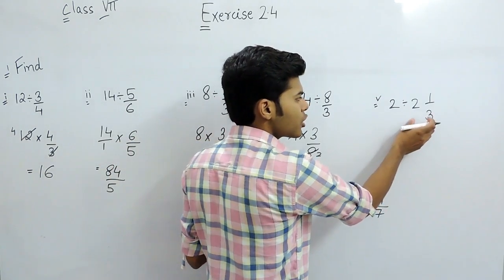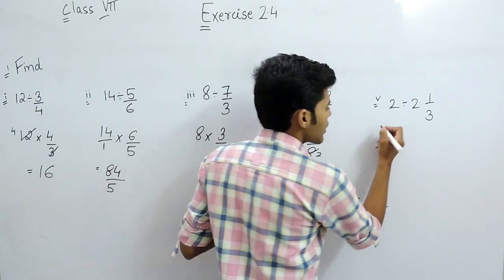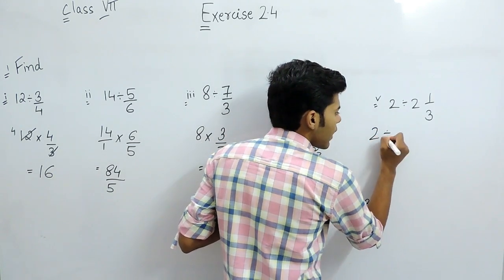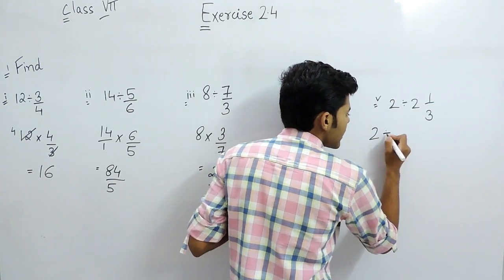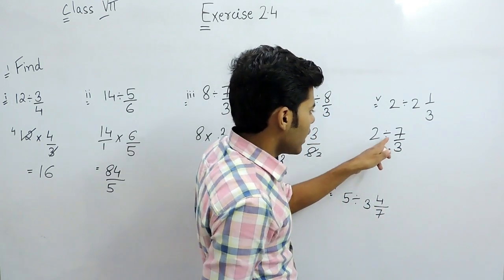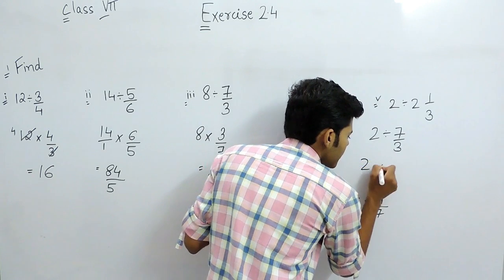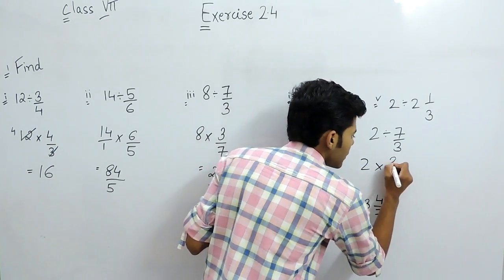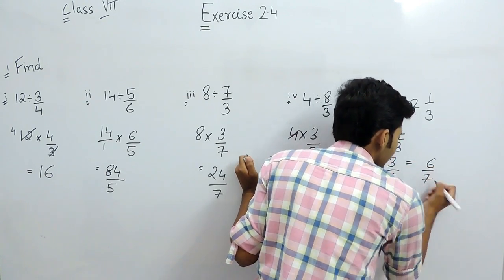In the fifth part, first of all we will convert this mixed fraction into improper fraction. That will be 2 divided by, 3 times 2 is 6, 6 plus 1 is 7 by 3. Now it is 2 divided by 7 by 3, so we will put multiplication here with the reciprocal. So our answer will be 6 by 7.